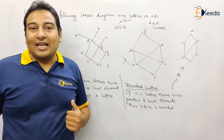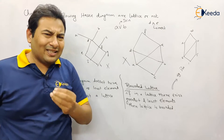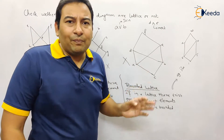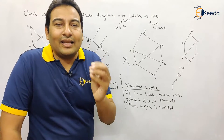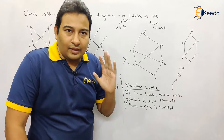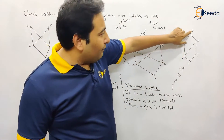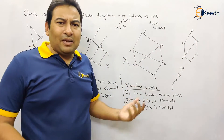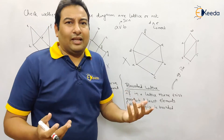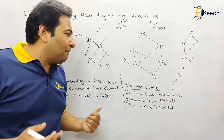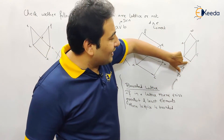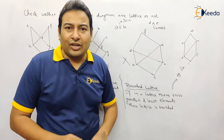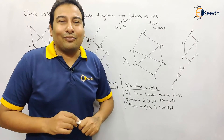There is one more topic to discuss — a simple small topic called bounded lattice. It is related to this topic. If a lattice has a greatest element and a least element, then the lattice is said to be a bounded lattice. This can come in the exam — in MCQs or oral exams. So the definition of bounded lattice is: if it has a least element as well as a greatest element, then that lattice becomes a bounded lattice. That is it for this video — hope you understood. Thank you.